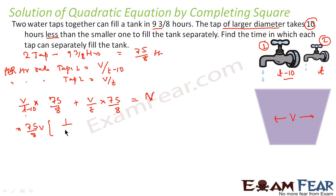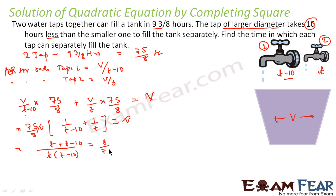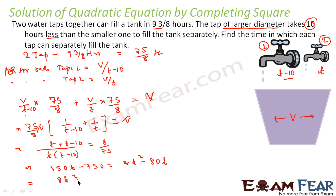Solving further: combining the fractions gives (t + t − 10) / (t(t−10)) = 8/75, so (2t − 10) × 75 = 8t(t−10). This expands to 150t − 750 = 8t² − 80t. Rearranging: 8t² − 230t + 750 = 0.